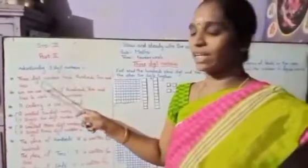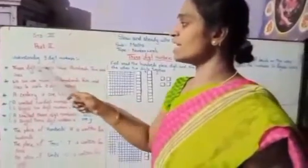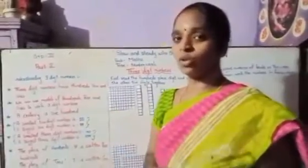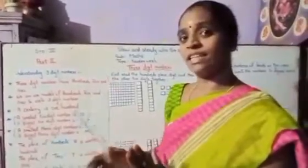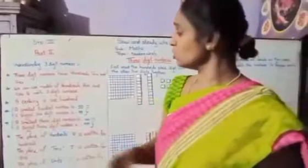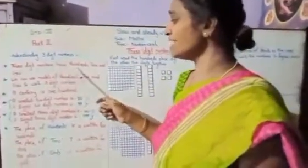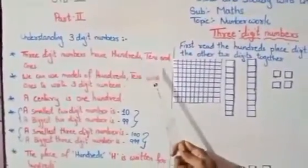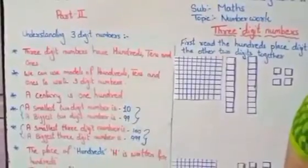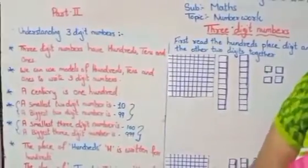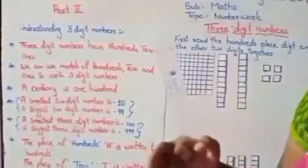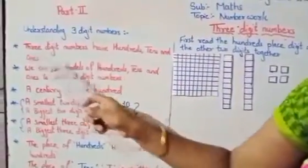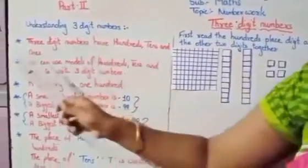What are you going to learn in Part 2? Just look here — understanding 3-digit numbers. From 1 to 99 you all know how to write. After 100: 101, 102 — there are a lot of numbers up to 999. 3-digit numbers have 100s, 10s, and 1s. 1s means units. Units are 1 to 9; 10 to 99 are the 10s; and 100 to 999 are the 100s place.